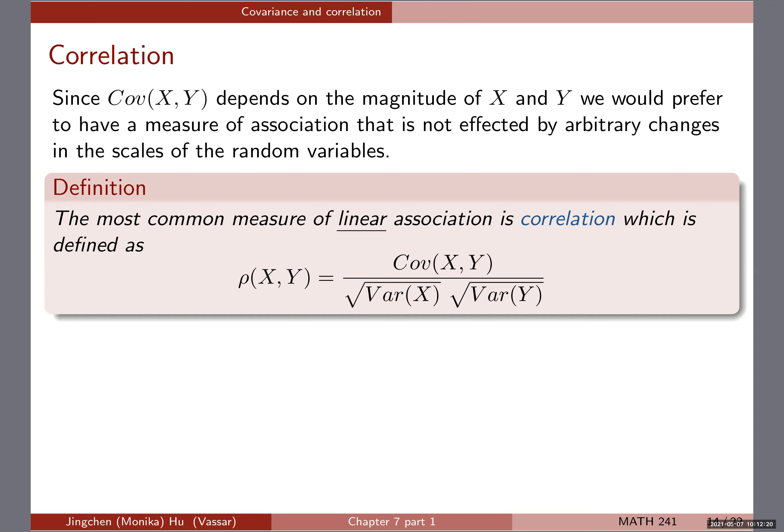Remember, since covariance depends on the magnitude of x and y, you might want to make sure that we can have a scale — a particular measure about the relationship between x and y — that is not particularly affected by any changes in the scales of the random variables. So we propose a new term here: correlation.